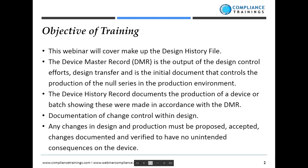The webinar covers the makeup of the Design History File. The Device Master Record is the output of the design control efforts, design transfer, and the initial control documents that control production. The Device History Record documents the production of a device or batch, showing it was made in accordance with the Device Master Record. Documentation of change controls within design is also covered — any changes in design and production must be proposed, accepted, documented, and verified to have no unintended consequences on the device before they're put into place.